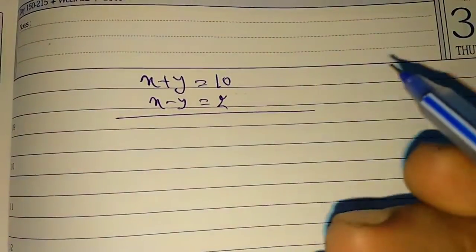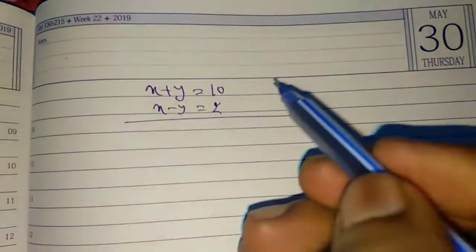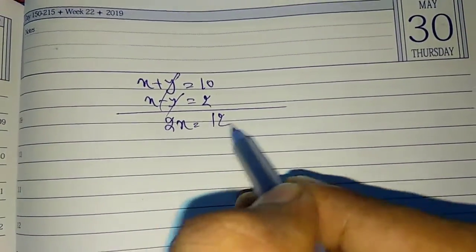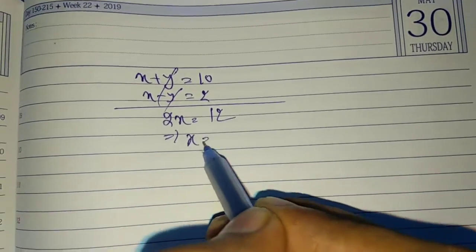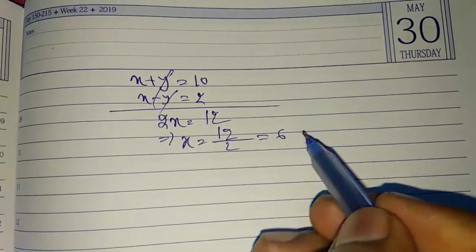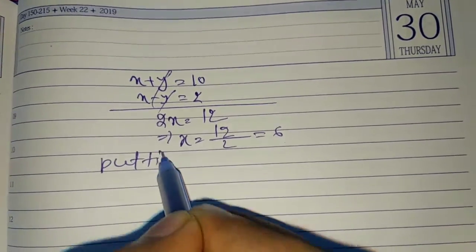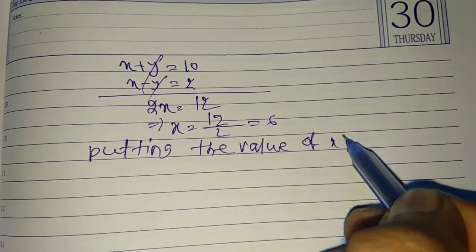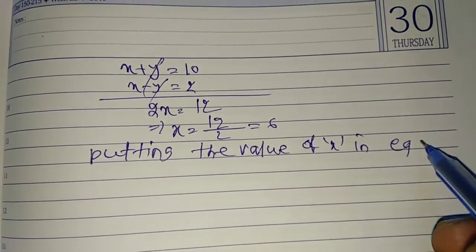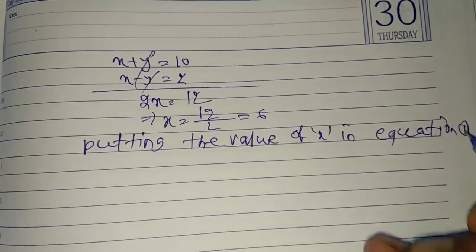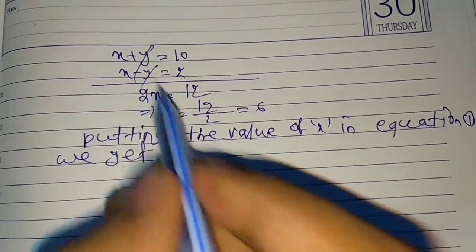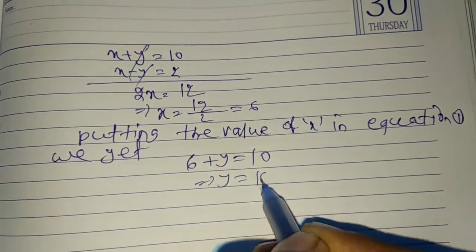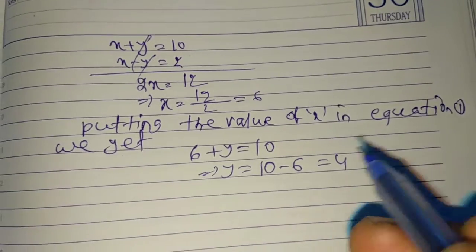We solve these 2 equations by elimination process. Plus y minus y cancel. Then 2x equals 12, x equal to 12 by 2, that is 6. Putting the value of x in equation 1, we get 6 plus y equal to 10. Then y equal to 10 minus 6, that is 4.